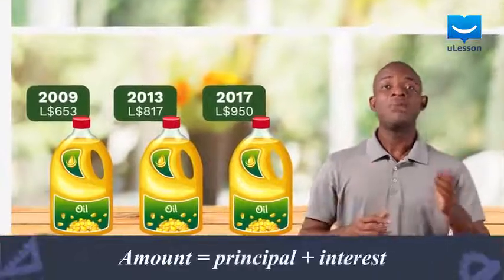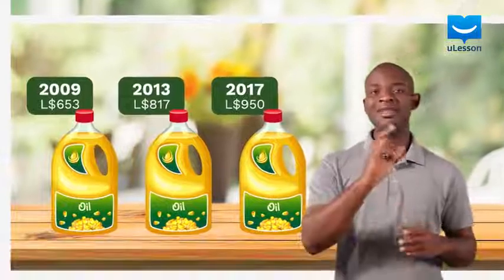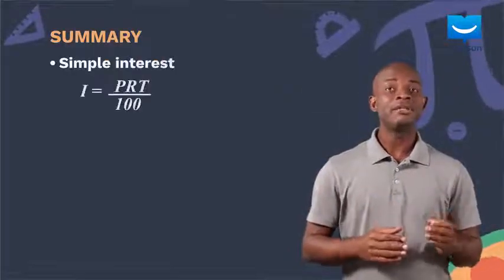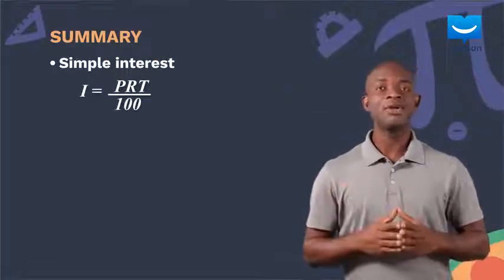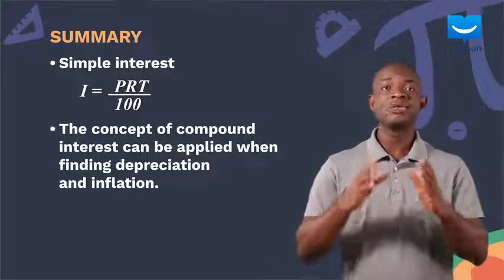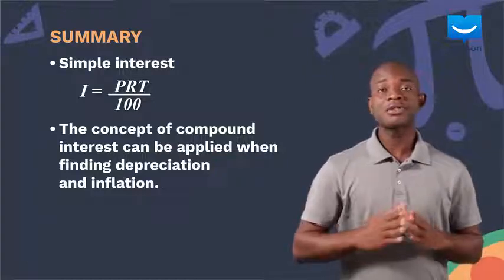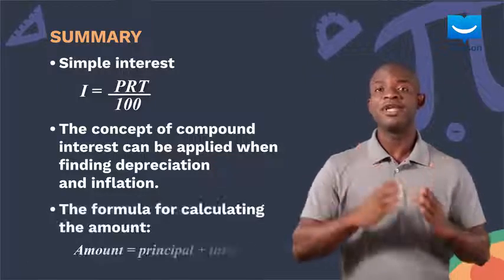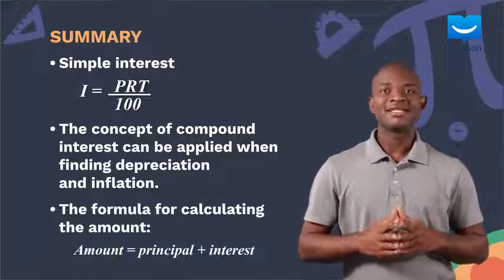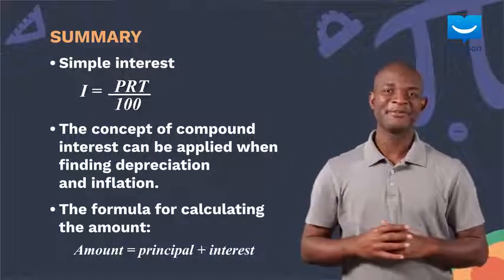The amount is the sum of the principal and the interest. In this lesson, we have learnt about simple interest and its formula, compound interest and how it relates to depreciation and inflation. We also learnt about the formula for calculating the amount. Join me in subsequent lessons as we take practical examples. See you there.